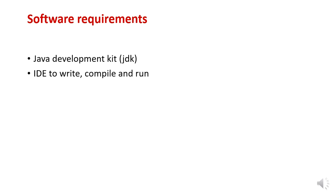Let us look at the software requirements. To practice Java programming we need a Java Development Kit (JDK). It is a Java development environment which includes important utilities like compiler and interpreter. So having a JDK is a must. Then we need an IDE — an Integrated Development Environment — to write, compile, debug, and execute programs. Various tools are available: jcreator, BlueJ, NetBeans, or Eclipse. I prefer jcreator for core Java.